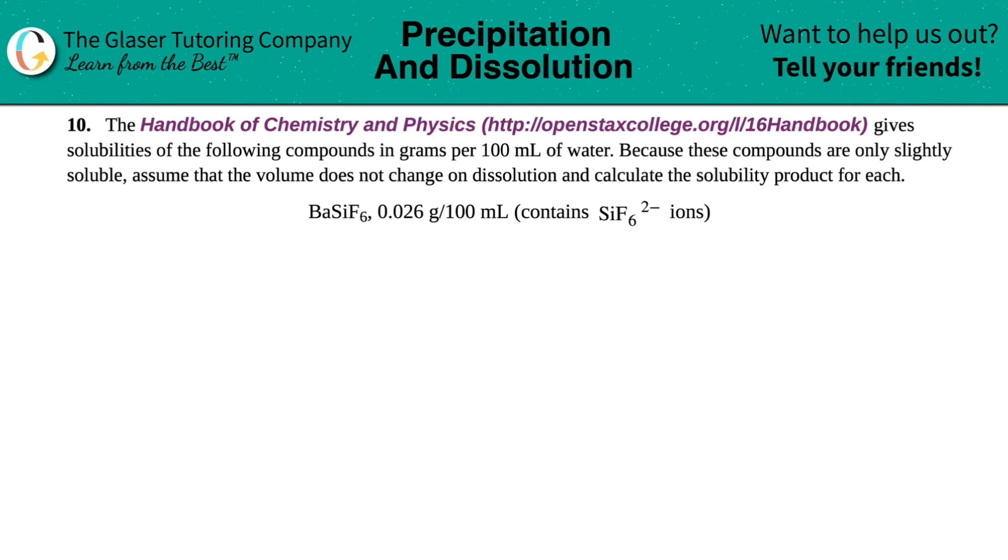Number 10. The handbook of chemistry and physics gives solubilities of the following compounds in grams per 100 mils of water. Because these compounds are only slightly soluble, assume that the volume does not change on dissolution and calculate the solubility product for each of them.